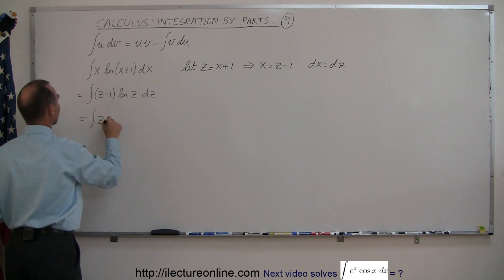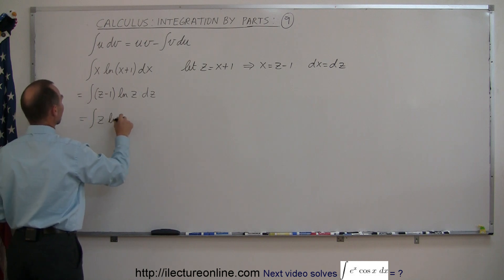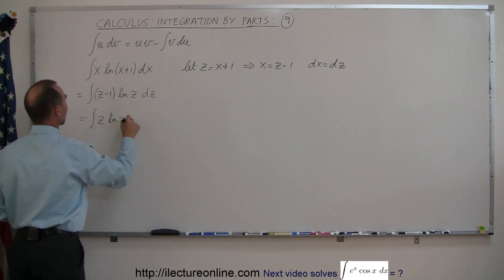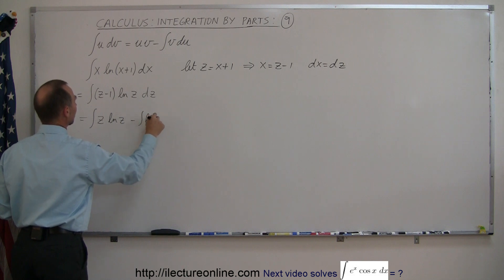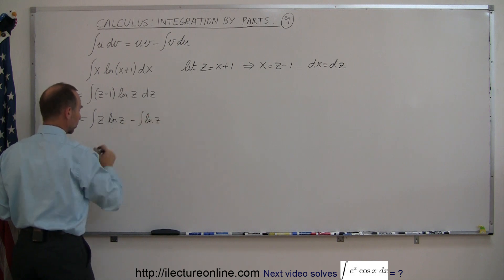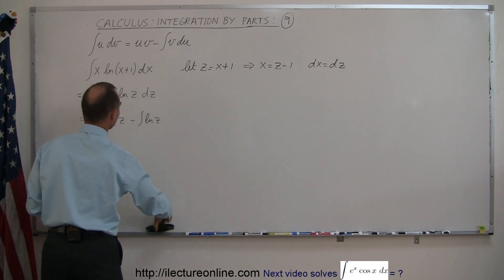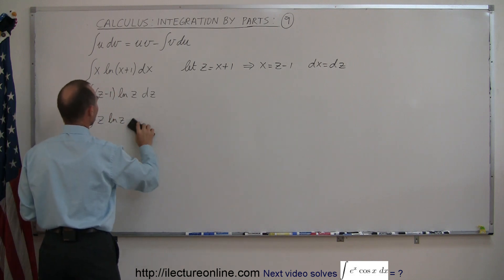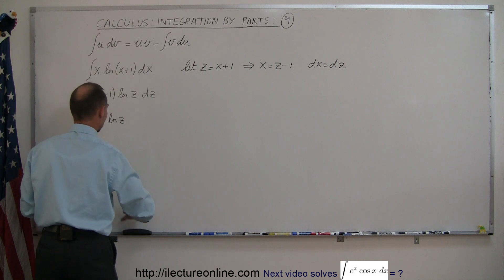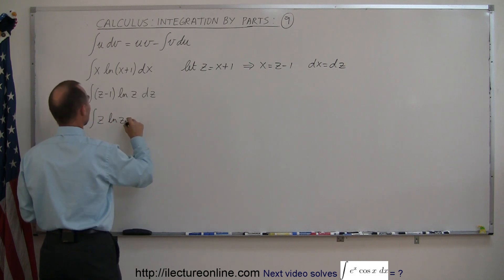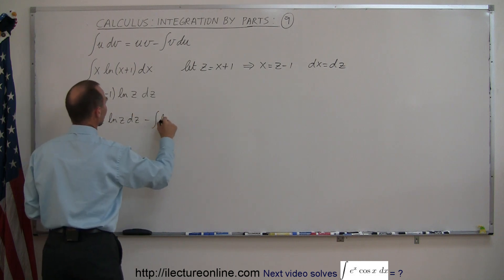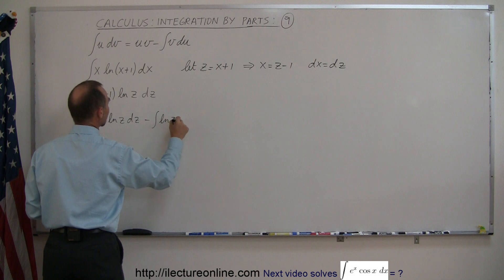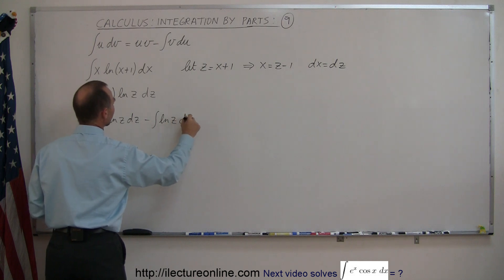The integral of z times the natural log of z dz, minus the integral of the natural log of z dz.